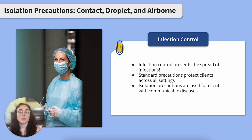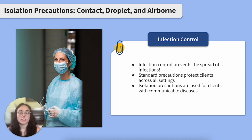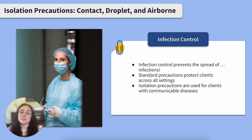I'm sure we remember learning how to wash our hands in fundamentals and it seems so simple, but then we learned that hand hygiene is only a small piece of the infection control puzzle. Everything from standard precautions to antibiotic administration to isolation precautions all fall under the umbrella of infection control. Standard precautions are a set of practices designed to protect all clients in all settings, involving hand hygiene and use of personal protective equipment, or PPE. When a client has a suspected or known communicable disease, isolation precautions are put into place to build upon those safety measures.